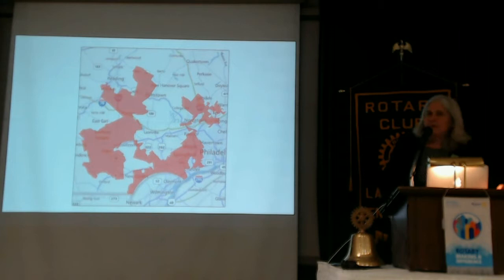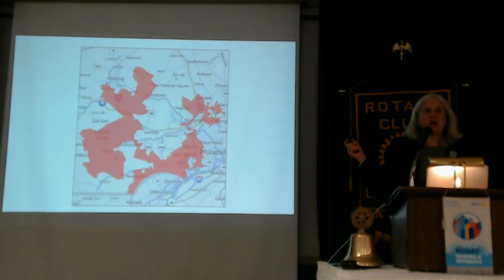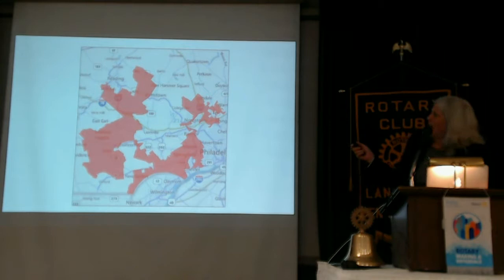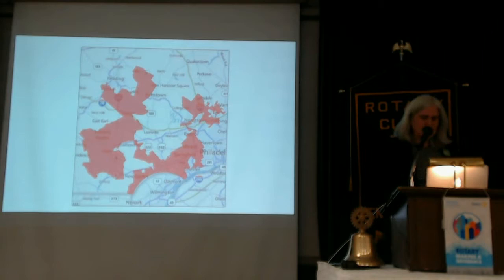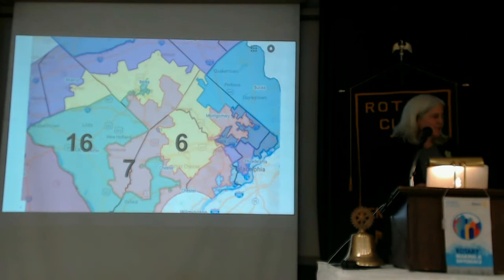If you look at lists of the worst gerrymandered districts in the country, District 7 always ends up on the list. Some people call it Goofy Kicking Donald, or Goofy Kicking Mickey Mouse, or Bullwinkle, or Spin Art. People make up names for these and think about the shapes, but it's not so much the shape — it's the story behind it.